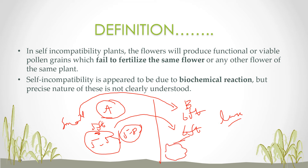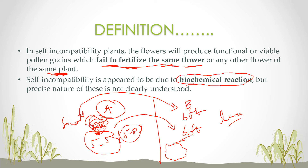In terms of definition, self-incompatibility is where flowers produce functional or viable pollen grains but fail to fertilize the same flower or any other flower of the same plant. Even though they can produce offspring, nature has inhibited fertilization within the same flower, mainly due to biochemical reactions. Researchers are still investigating the exact reason why fertilization is blocked.